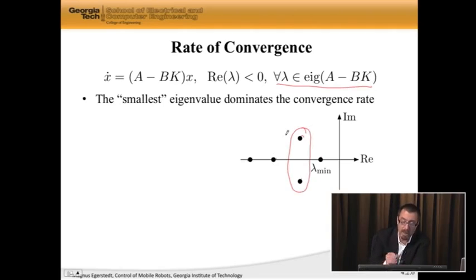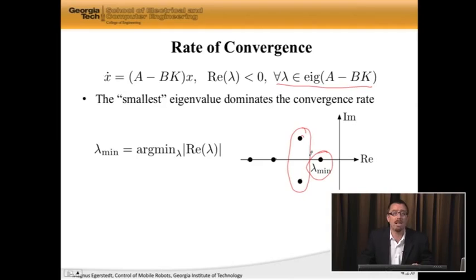Notice here I have a complex conjugate pair. The eigenvalue closest to the imaginary axis is the smallest eigenvalue.